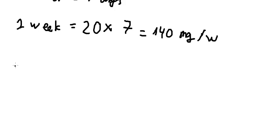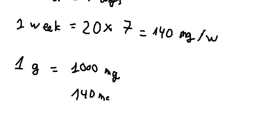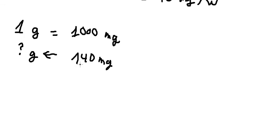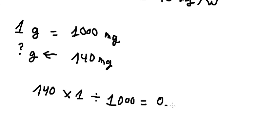So one gram equals 1000 milligrams. We have 140 milligrams and we want to find how many grams. So we take 140 multiplied by 1, then divide by 1000, and we get 0.14 grams per week. This is the final answer.